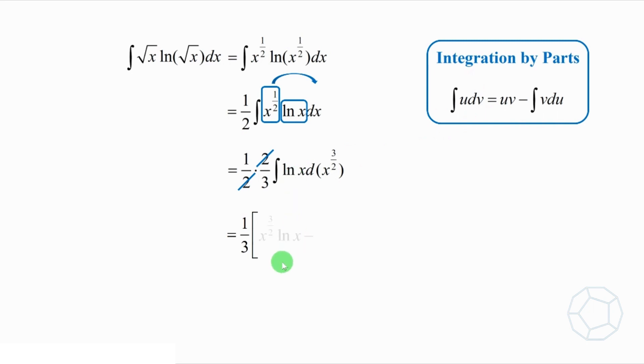The first term is the product x to the power of 3 over 2 times log x. The second term is the integral by swapping u and v, which is integrate x to the power of 3 over 2 d bracket log x.